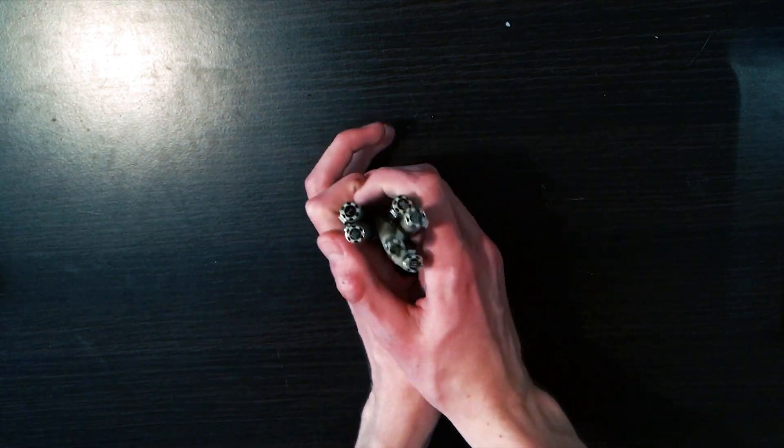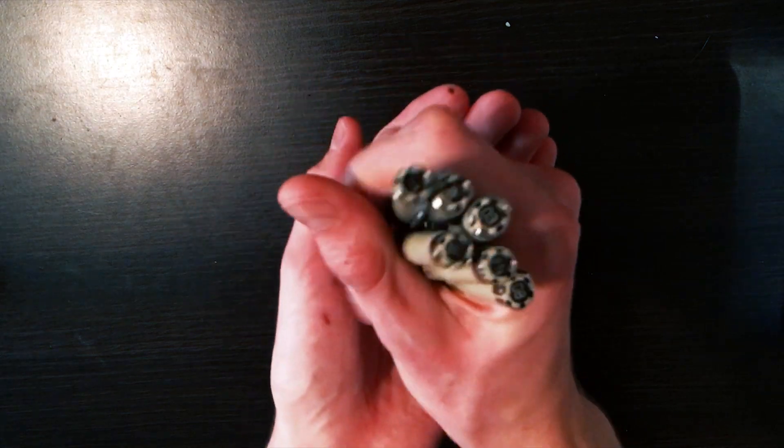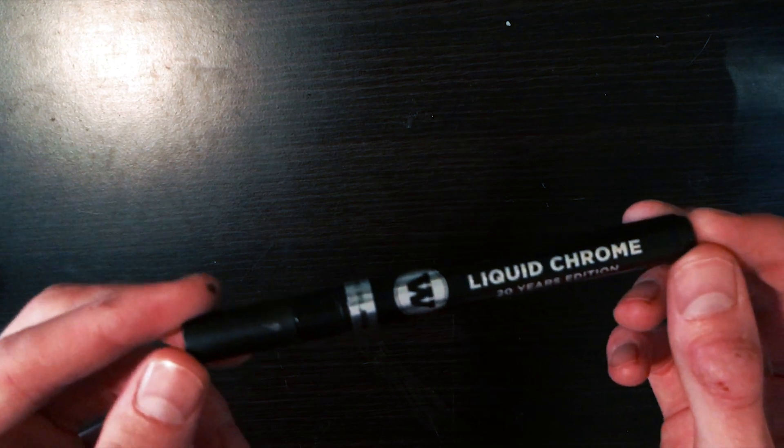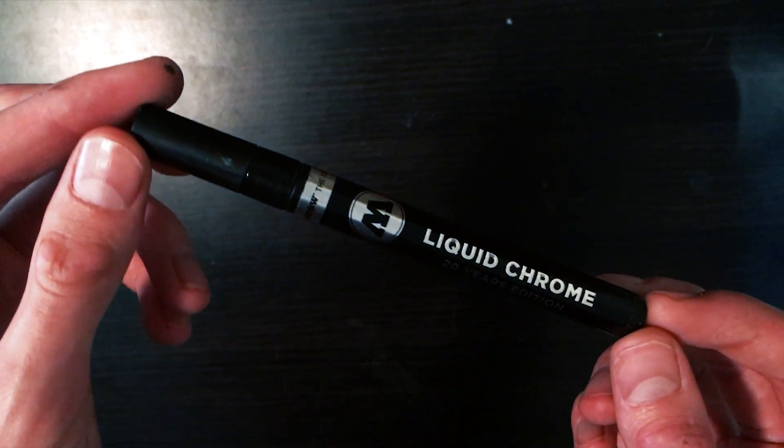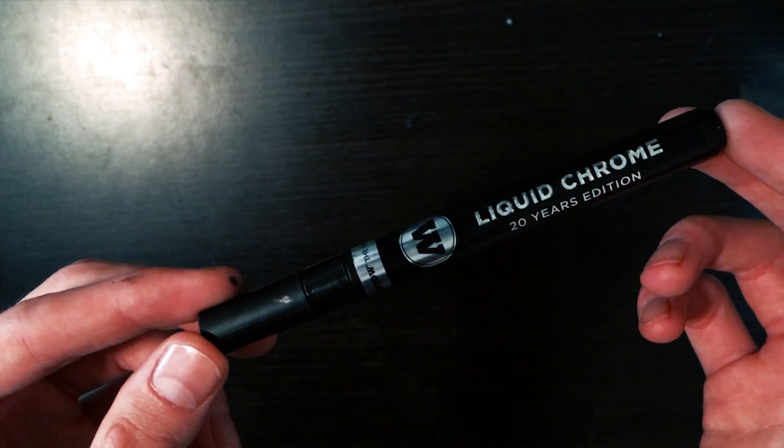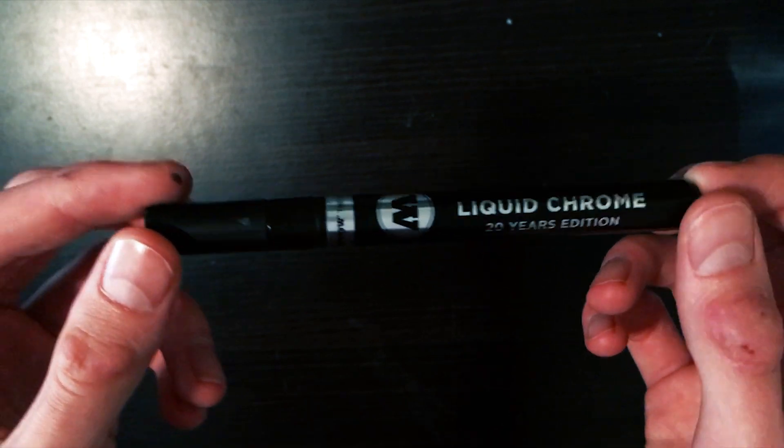The next supply that I will be using somewhat is my Molotow Liquid Chrome Pen. This does somewhat break my rules. It is a metallic silver color, which doesn't fit with the black and white. I mean, it kind of does. It's like shiny gray.